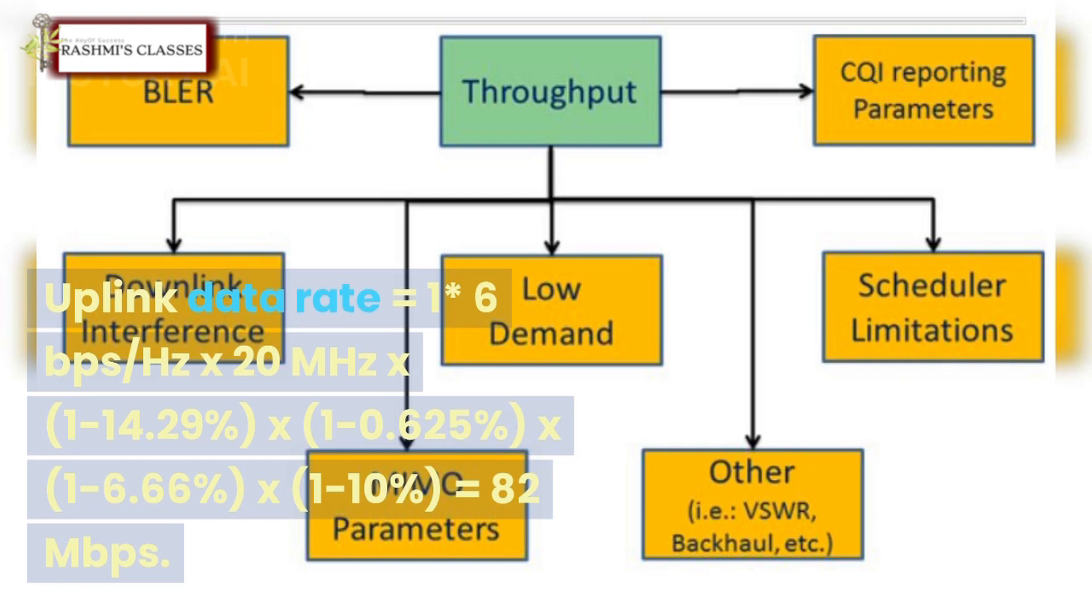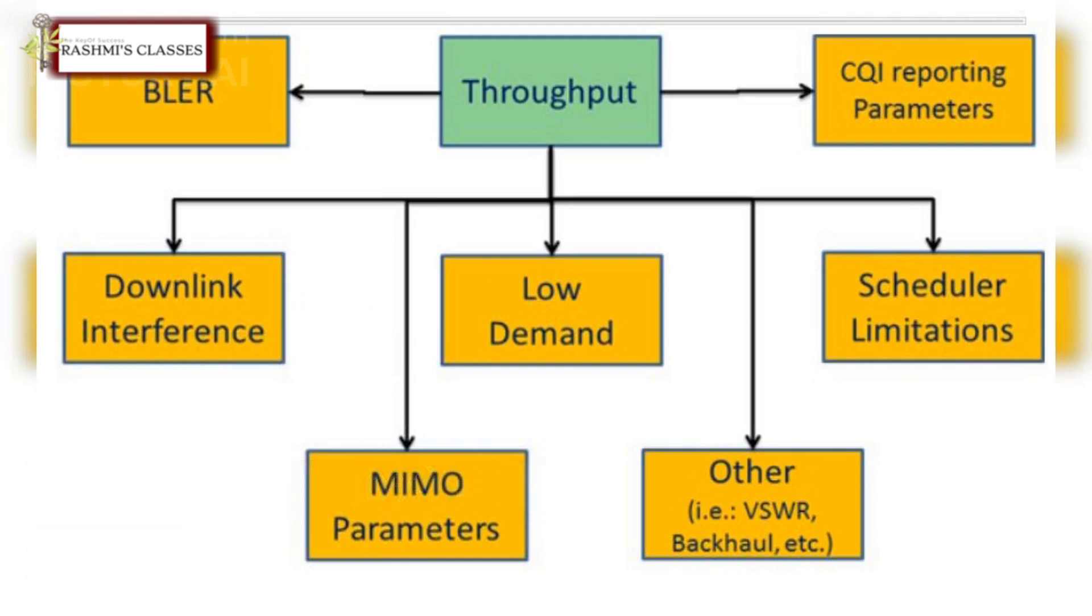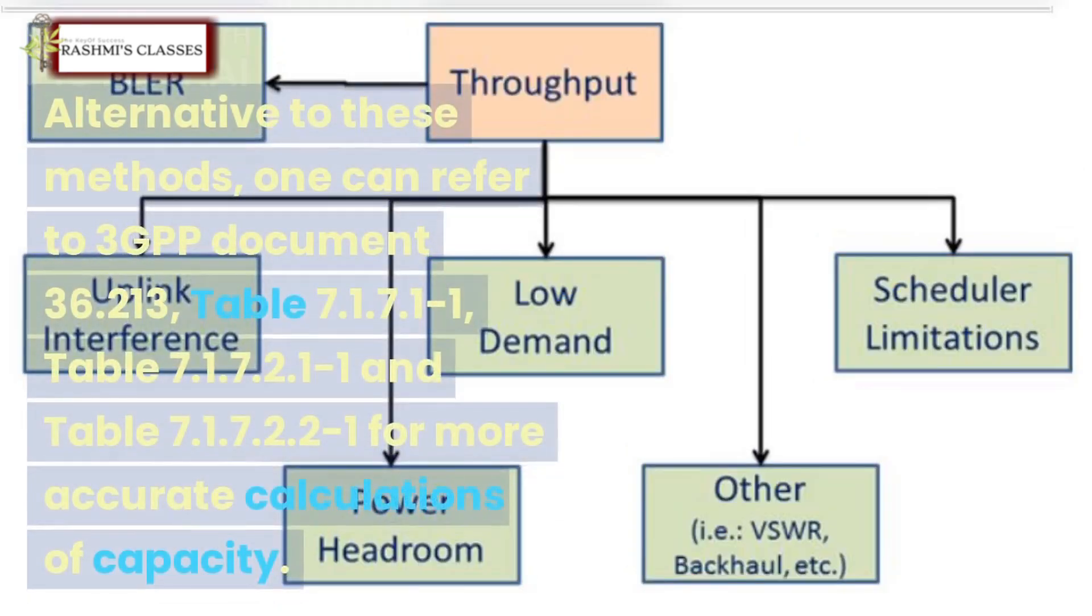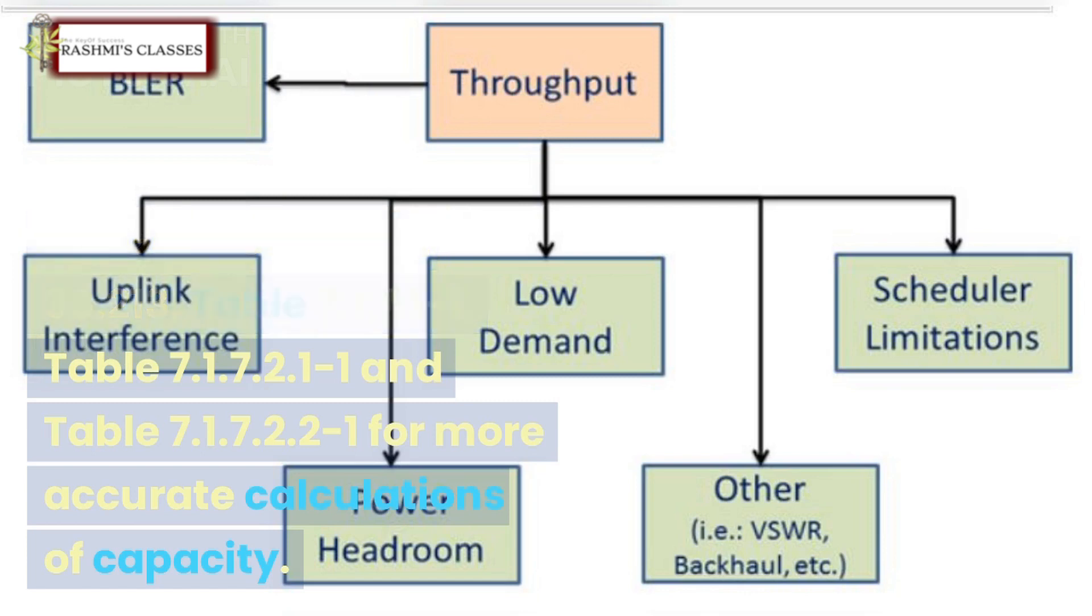Alternative to these methods, one can refer to 3GPP document 36.213, Table 7.1.7.1-1, Table 7.1.7.2.1-1, and Table 7.1.7.2.2-1 for more accurate calculations of capacity.